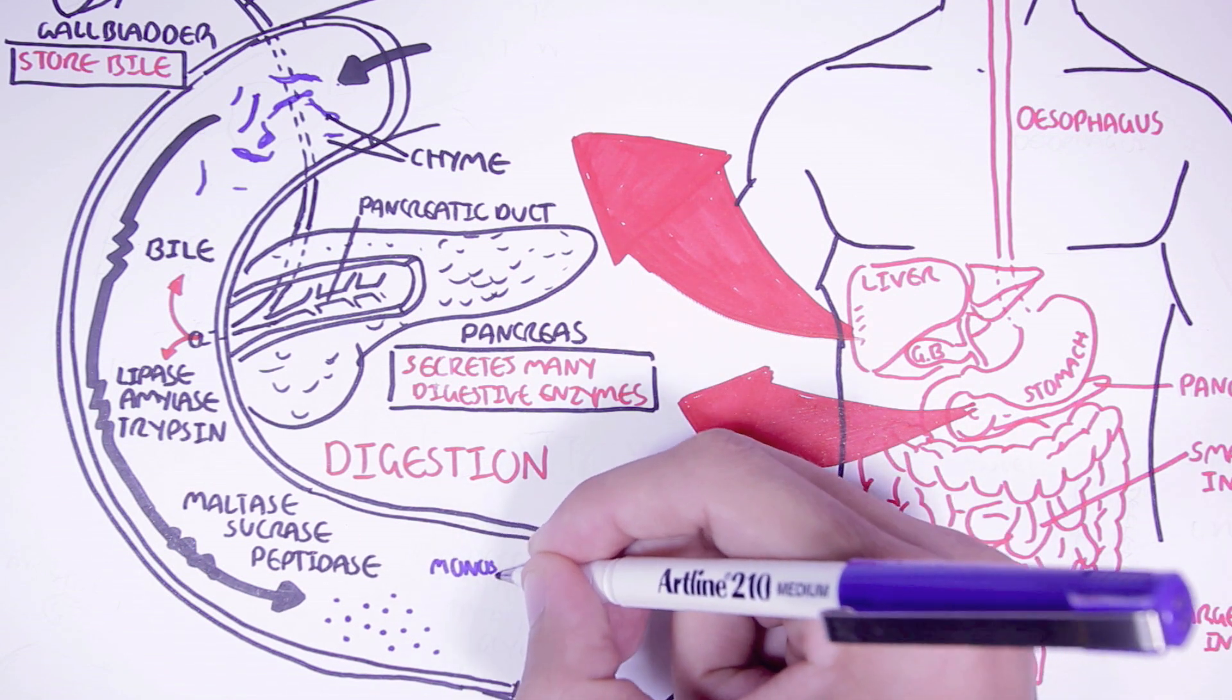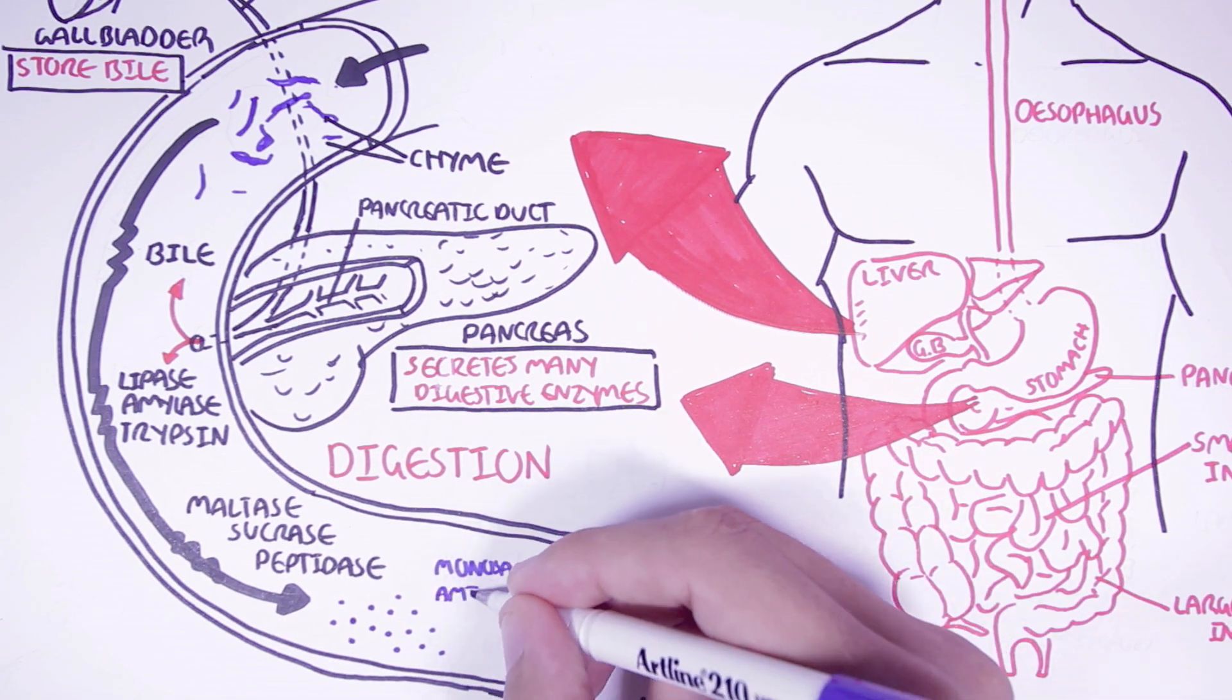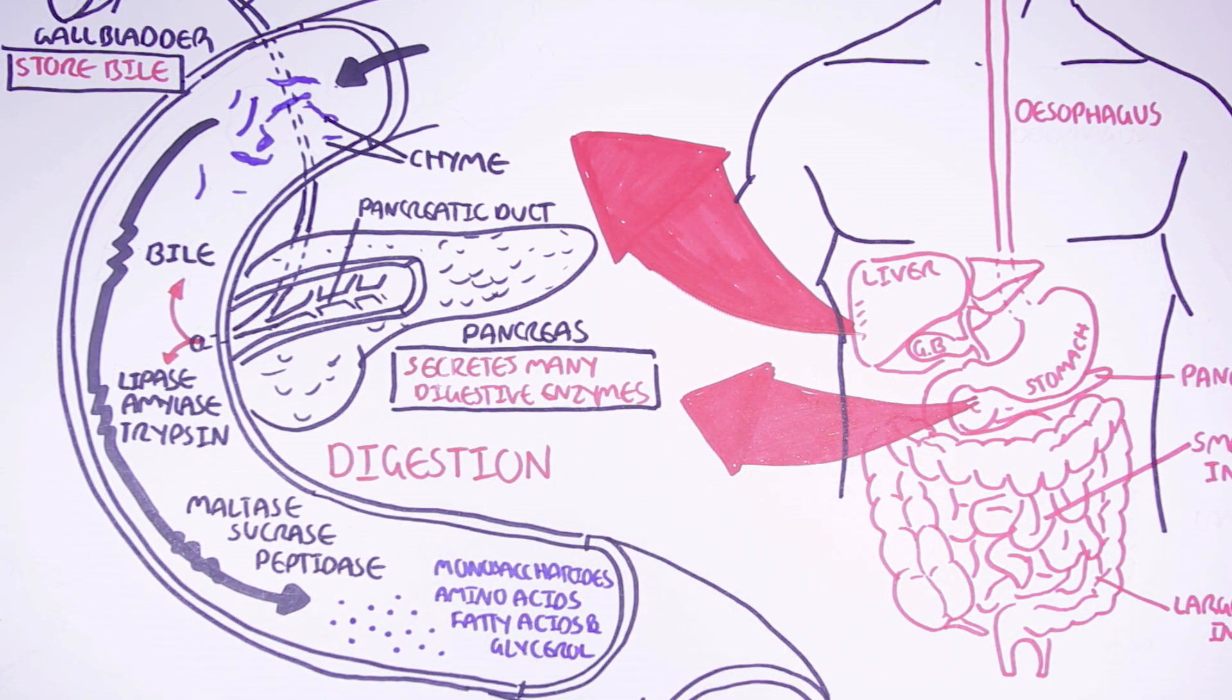These smaller molecules are the monosaccharides, amino acids, fatty acids, and glycerol, which are the building blocks of carbohydrates, proteins, and fats. And it is only in this form that the body can absorb them.